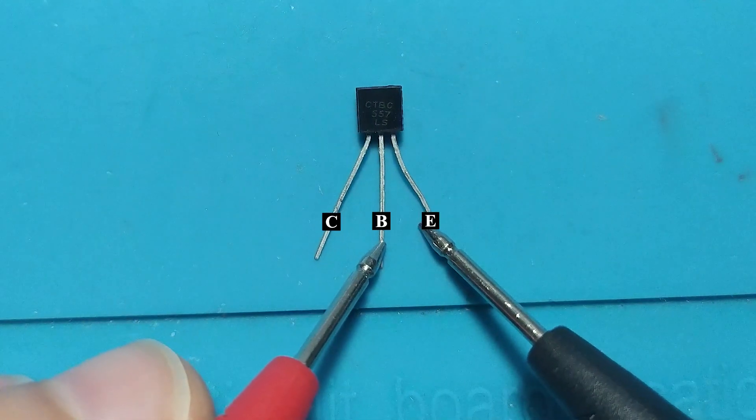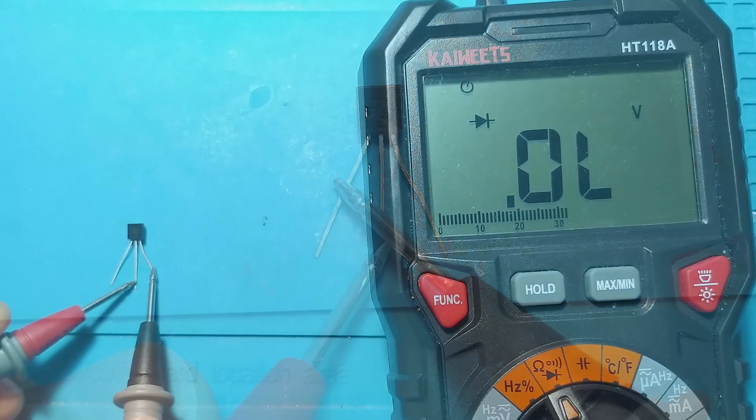With the red probe on the base and the black probe on the emitter or collector, should not have any voltage drop.